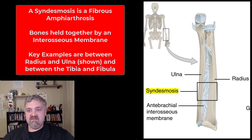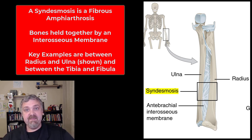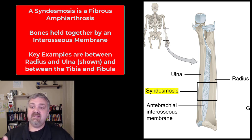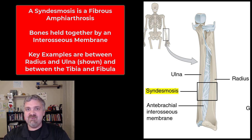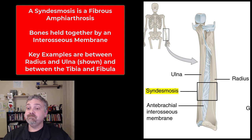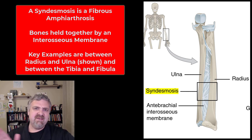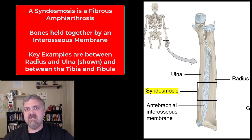The syndesmosis is an example of a fibrous amphiarthrosis — held together by fibrous connective tissue but slightly movable. The picture here shows the radius and ulna; those radial-ulnar joints are held together by the interosseous membrane, allowing considerably more movement. Your forearm moves a lot more than your teeth or the sutures in your skull. Another example is the similar joint holding the tibia and fibula together.